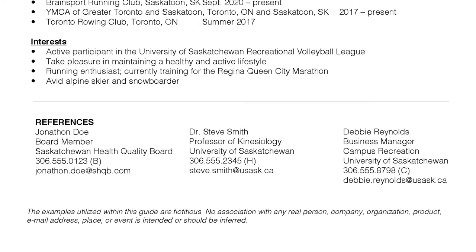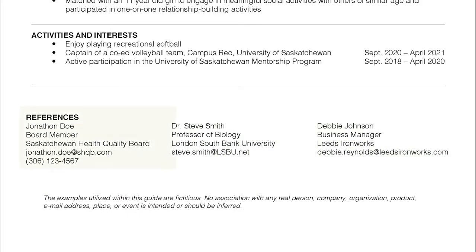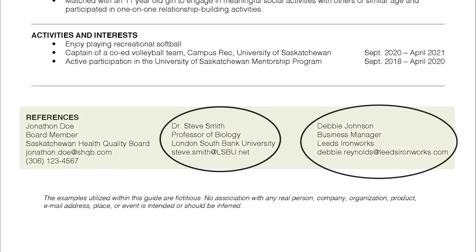Step six: references. Generally, three references are required in Canada. If you are very new to Canada, two can be non-Canadian. For references outside of Canada, include their name, position title, how you know this person, and the company and email address only. We only include the email address and not the phone number because of the time difference, which may make it hard for the potential employer to contact your reference.